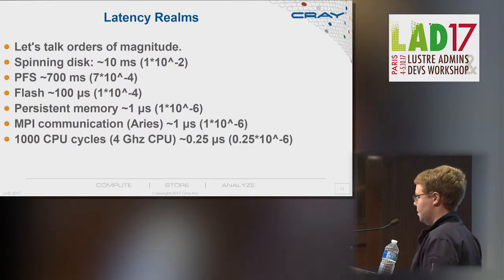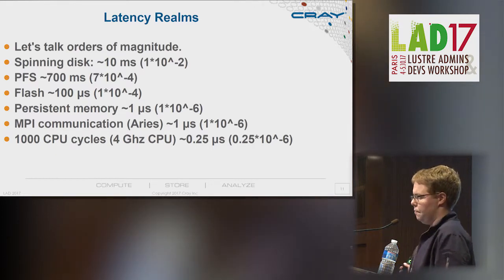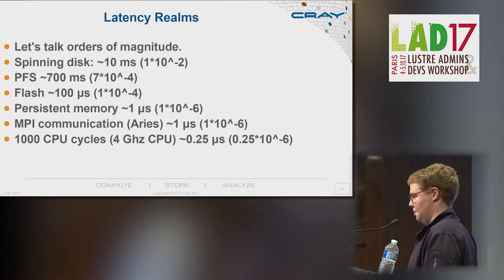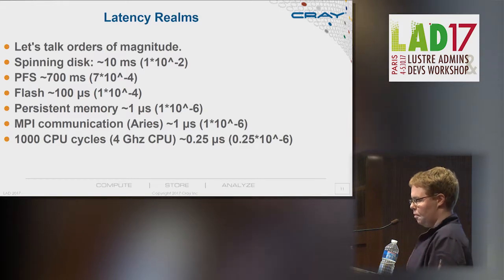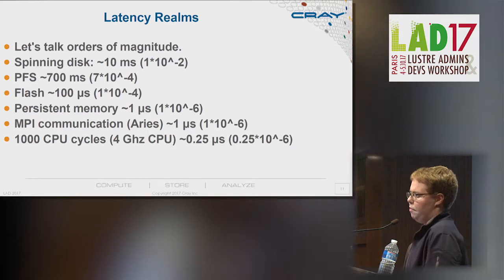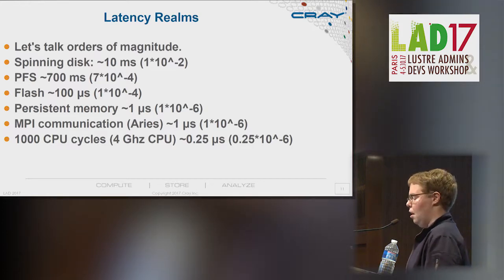When we talk about latency realms — something familiar to people who've watched these talks for the last few years — you've got spinning disk at about 10 milliseconds to do an IO, these are round numbers. For your parallel file system you're at maybe 500 to 700 microseconds, so roughly a factor of 10 improvement. And then with flash, you do have a full factor of a hundred — flash IO latencies are broadly speaking 100 microseconds. The new persistent memory tech, at least they tell us soon, will be able to do a single microsecond for small IO.